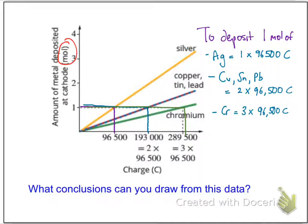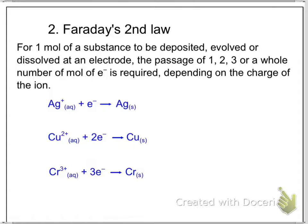And to deposit one mole of chromium, you need three lots of 96,500 coulombs. Why one, two, and three? Well, the charge on a silver ion is 1+. Copper, tin, and lead have 2+. And chromium has 3+. There must be some relation between 96,500 coulombs and the charge on their ions. This is what Faraday came up with for his second law: for one mole of a substance to be deposited, evolved, or dissolved at an electrode, the passage of one, two, three, or a whole number of moles of electrons is required, depending on the charge of the ion.